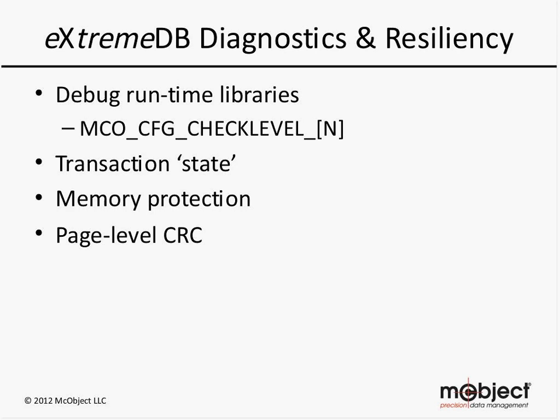Finally, with ExtremeDB you can choose to enable an option that calculates a CRC value for every page of the database. So if the database is modified in any way other than through the database programming interface — for example, a loose pointer scribbles random data into the database cache and that cache gets flushed to disk — that CRC check will fail, alerting you to the corruption.